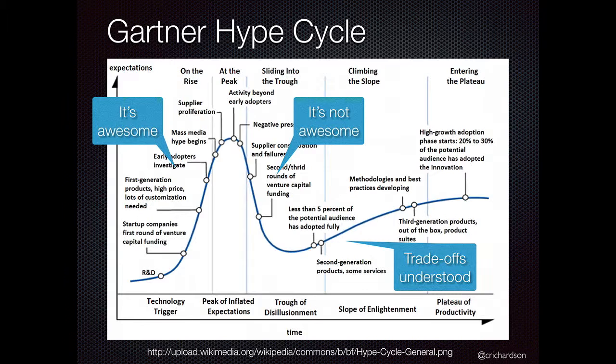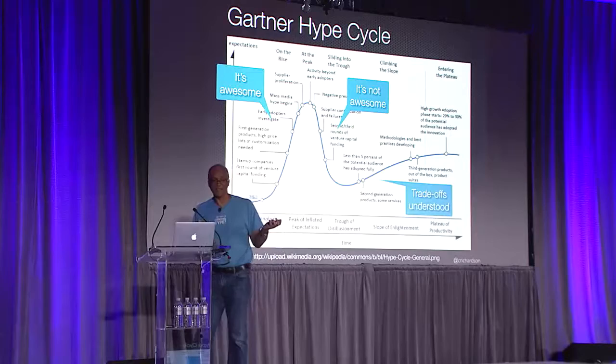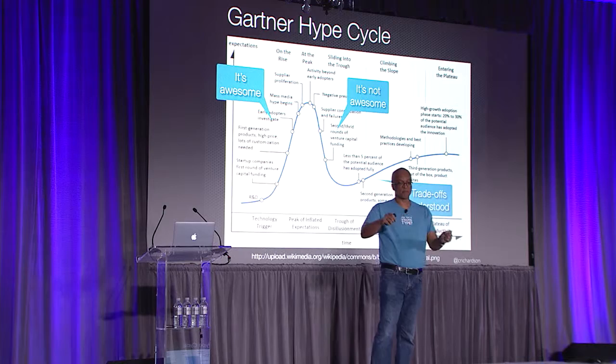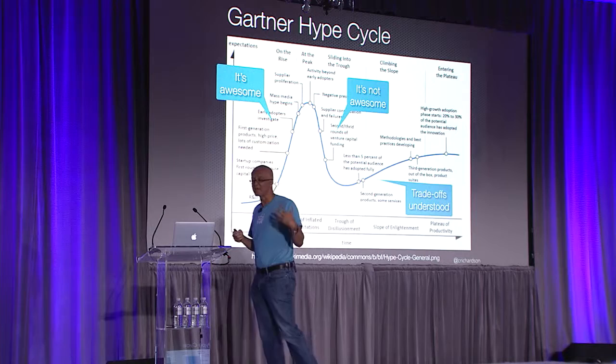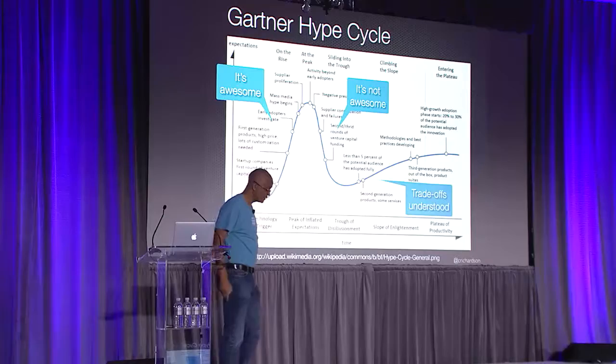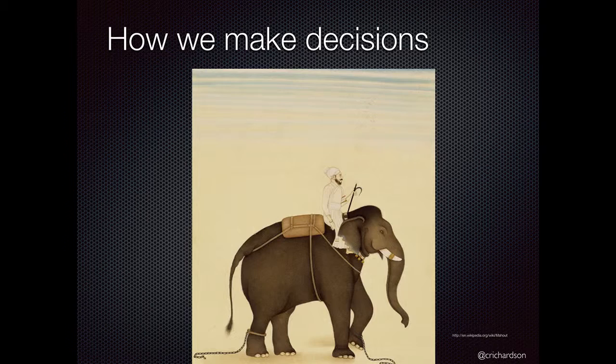Eventually people figure out the trade-offs and how to properly apply a technology, and it goes up the slope of enlightenment to the plateau of productivity. Today, microservices is rapidly shooting up towards the peak of inflated expectations. Docker is probably ahead in terms of hype. Node.js has gone up there and is probably heading toward the trough of disillusionment. Things tend to be very hyped, driven partly by vendor marketing.